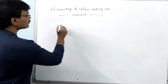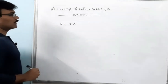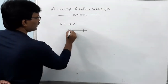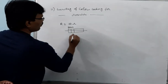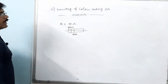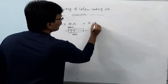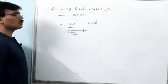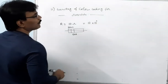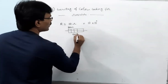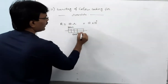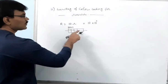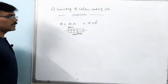Now, write the color coding for a 10 ohm resistor. First significant figure is 1, which is brown. Second significant figure is 0, which is black. For the multiplier: 10 ohm can be written as 10 × 10⁰, so the multiplier is 10⁰, which corresponds to black. Since no tolerance value is mentioned, by default there is no fourth color, and tolerance will be 20%. So the color coding for a 10 ohm resistor is brown, black, black.